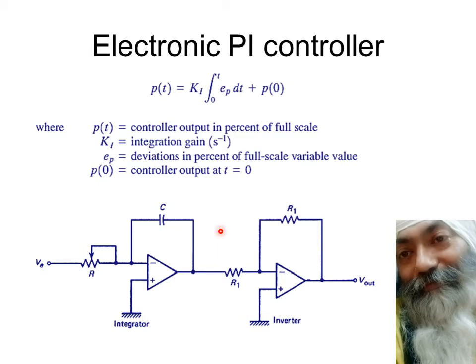Keep this figure in mind and we move on to the next slide to see its corresponding equation in terms of voltages. Instead of taking EP we will be taking VE, instead of taking PT or Pout we will be taking it as Vout. This will be taken as V0, and KI will be in terms of C, V, and R.